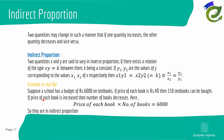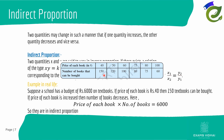A real-life example: a school has a fixed budget of 6000 rupees for textbooks. If the price per book is 40 rupees, 150 books can be bought. If the price increases to 50 rupees, only 120 can be bought. As price increases, the number of books decreases — price × number of books = 6000, confirming the inverse proportion formula xy = k.